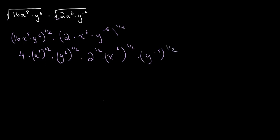Let's write this out in a more simplified way. So this is 4 — since 16 to the power of 1 over 2 is the square root of 16, which is 4. Then using the power law we multiply: 8 times 1 over 2 is 4, so we get x to the power of 4. Then 6 times 1 over 2 is 3, so we get y to the power of 3. Multiply this by the square root of 2, multiplied by x to the power of 3, times y to the power of negative 5 over 2.